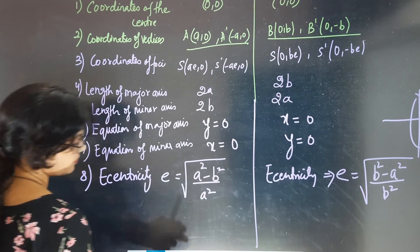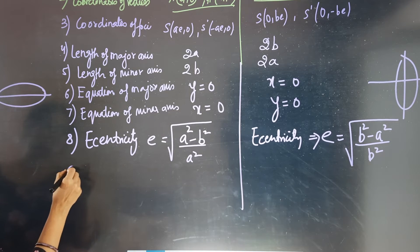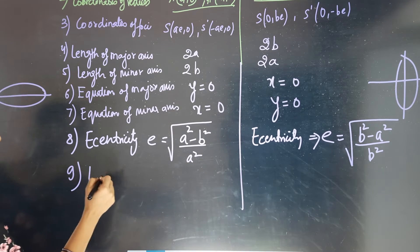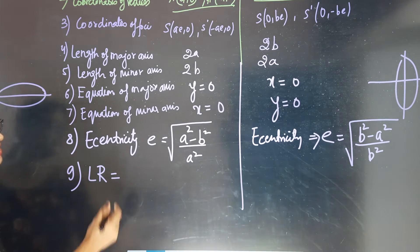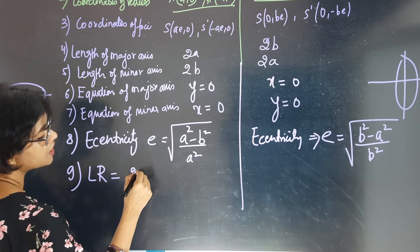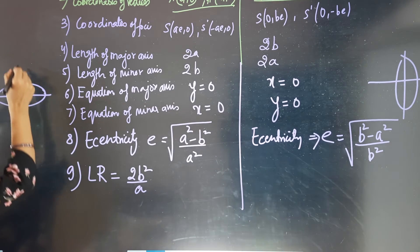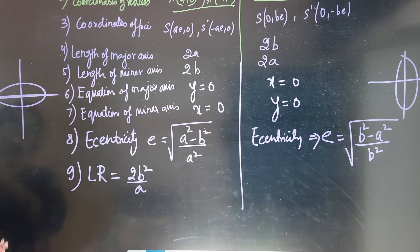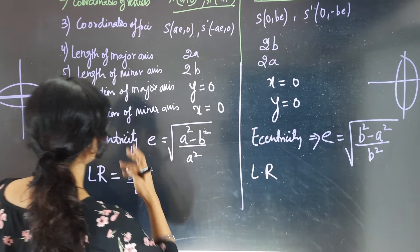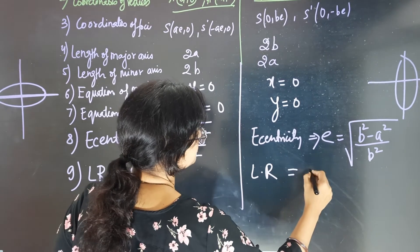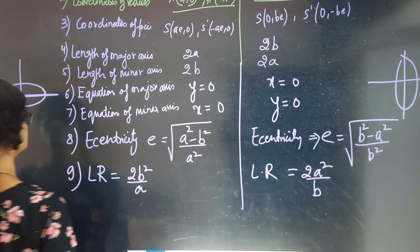Next: length of latus rectum. For the ellipse with major axis on the x-axis, we derived it previously as 2b²/a. For the ellipse with major axis on the y-axis, it is just the opposite: 2a²/b.